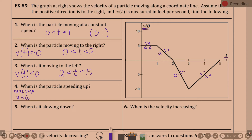When is the particle speeding up? Two to three. When is it slowing down? One to two and then three to five.